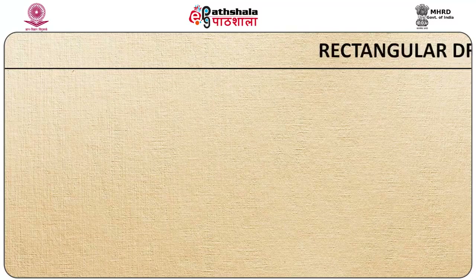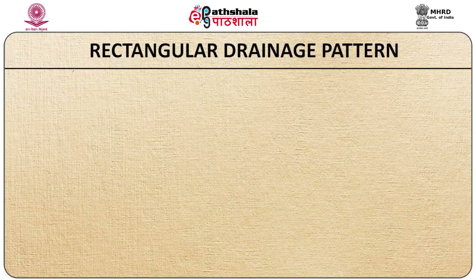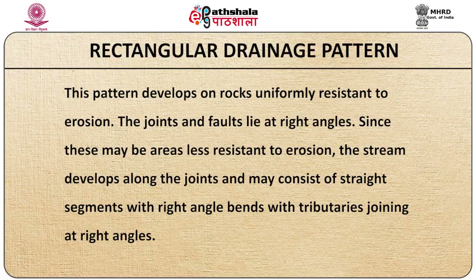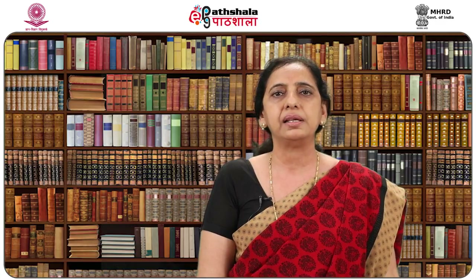Now we will look at the rectangular drainage pattern. This pattern develops on rocks uniformly resistant to erosion. The joints and faults lie at right angles, and since these may be areas less resistant to erosion, the stream develops along the joints and may consist of straight segments with right-angle bends, with tributaries joining at right angles. The modified basic pattern is angulate, and a compound rectangular-angulate pattern is quite common. A well-developed rectangular pattern is observed on the Norwegian coast and in portions of the Adirondack Mountains.